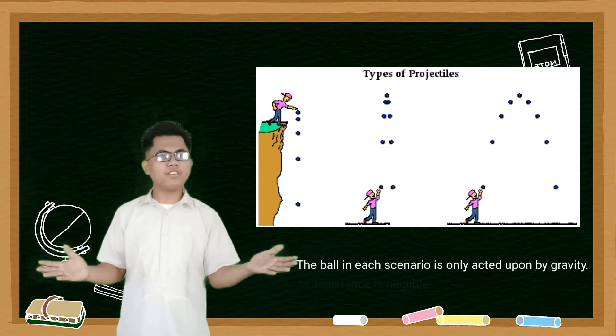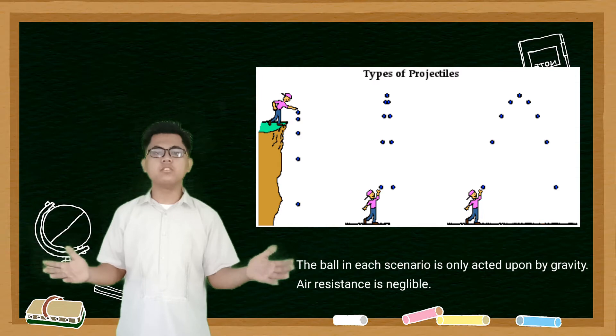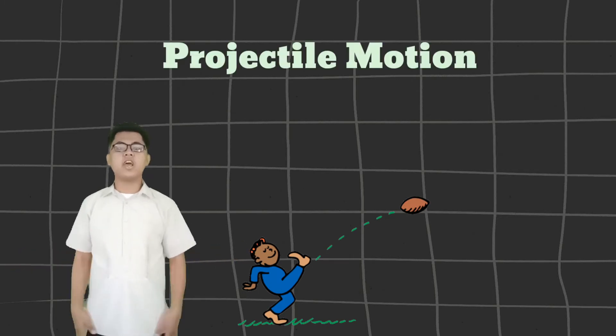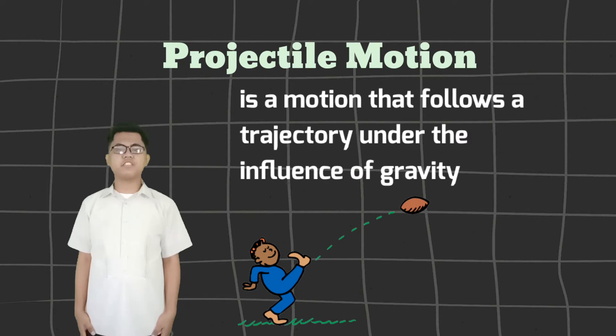We often neglect air resistance to make our observation and discussion simple. Projectiles exhibit a motion called projectile motion. A projectile motion is a type of motion which follows a trajectory under the influence of gravity.